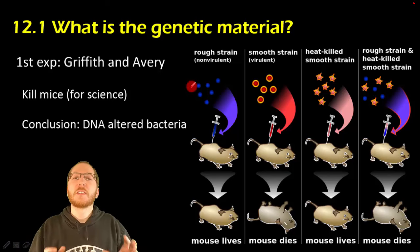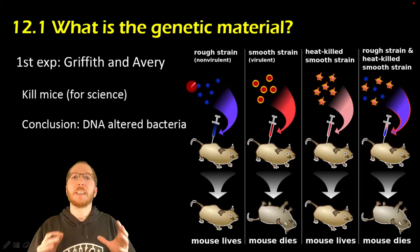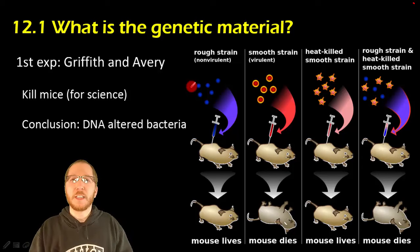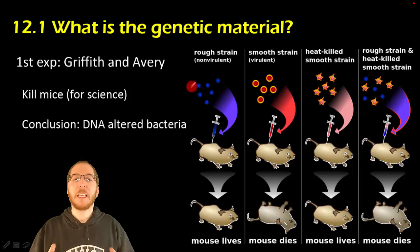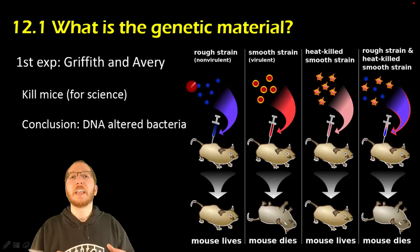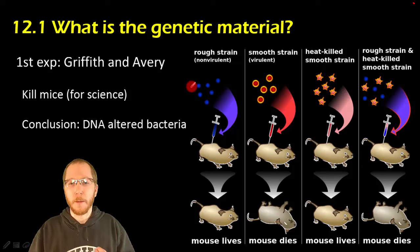The first people to experiment and demonstrate that DNA is the genetic material were Griffith and Avery. Griffith did the experiment initially, while Avery was the one who realized the significance — that DNA must be the culprit.